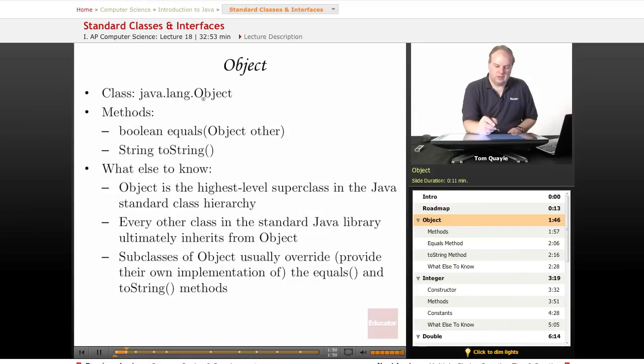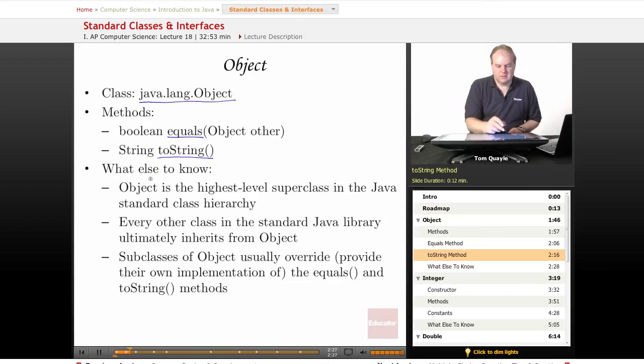First class that we're going to talk about is the Object class. And the full path to this is java.lang.Object. The two methods that you need to be aware of for the Object class are the equals method and the toString method. Equals is the method that returns a boolean that indicates whether this object is equal to another object. And toString is the method that is called when you want to produce string output from any type of object. So what else do you need to know about the Object class?